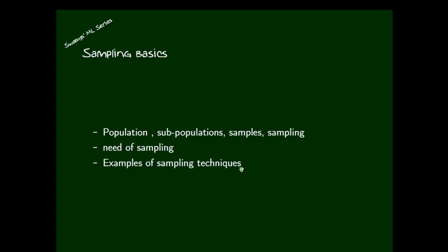For example, we can consider the COVID-19 data. COVID-19 is actually affected by all human beings in the universe, so the total human beings in this universe are considered to be the population. We can consider different continents — the different continents are subpopulations — or different countries, which can also be considered as populations.